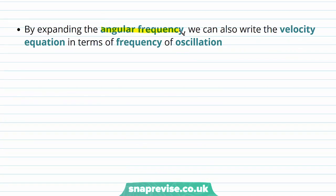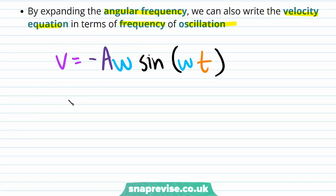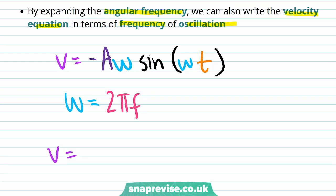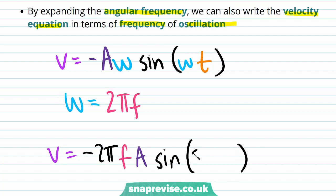By expanding the angular frequency, we can also write the velocity equation in terms of frequency of oscillation. Angular frequency omega is equal to 2 pi multiplied by frequency. Therefore we can rewrite velocity as: v equals minus 2 pi times frequency times amplitude times the sine of 2 pi times frequency times time.